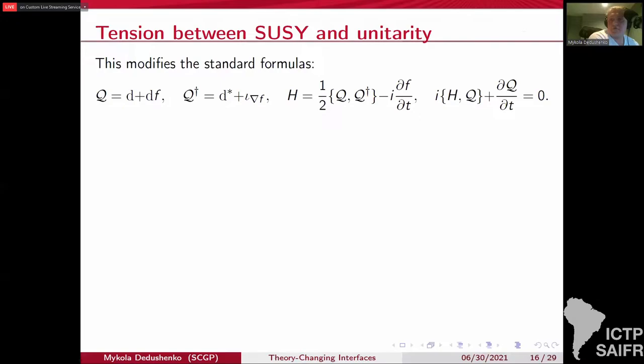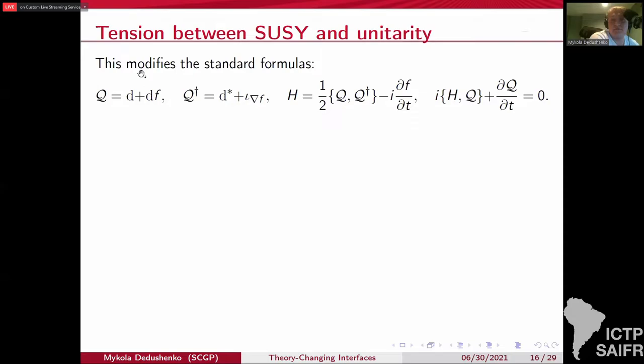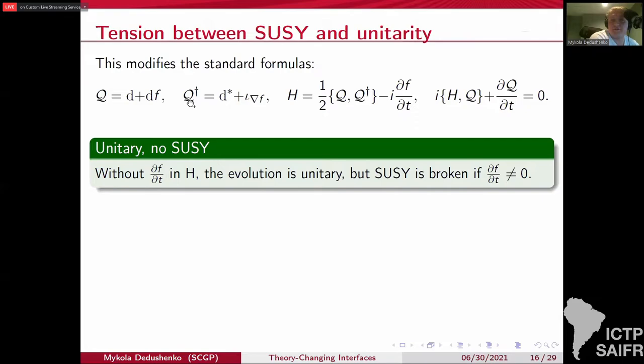Now, if you look at the operator formulation of this theory. Recall that in the standard formulation, the Hilbert space is identified with the differential forms on your target. And then you have supercharges acting like this. If you don't have this term, you just have the usual Hamiltonian given by the commutator. Then this theory, of course, is unitary, but it breaks. It usually breaks once you start changing F with time. But if you include this additional term, you actually preserve Q while breaking Q dagger.